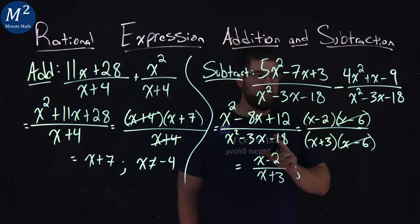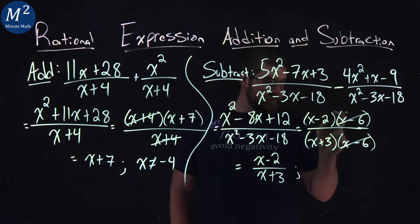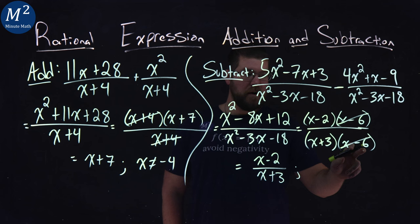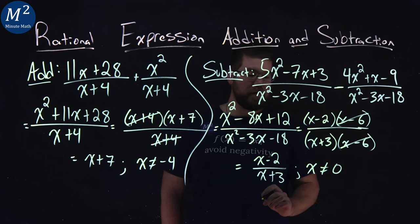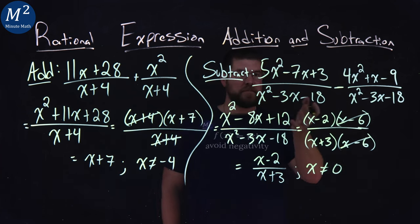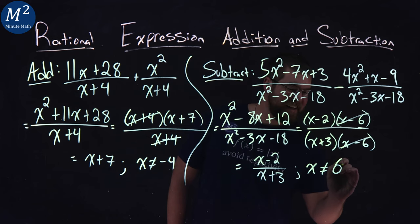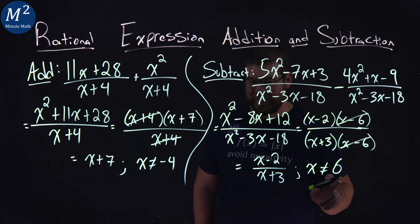Caveat we need to note here. What can x not equal? In the denominator, we had an x minus 6, right? So if x is a positive 6, it makes the denominator 0, so we can't do that. So x cannot equal 0 here. And there we have it. We simplified the second rational expression with subtraction. It is to be x minus 2 over x plus 3. But x cannot equal 6, not 0. If you caught that, let me know. But x cannot equal 6 there.